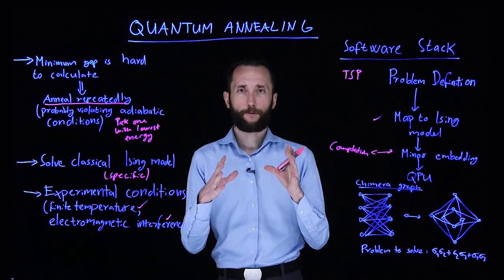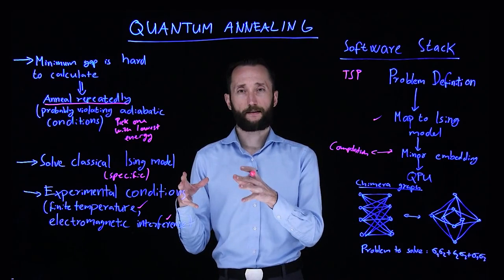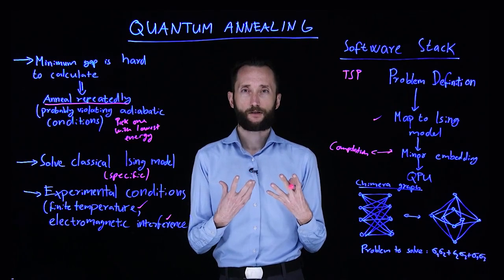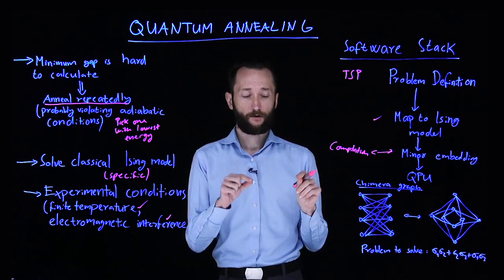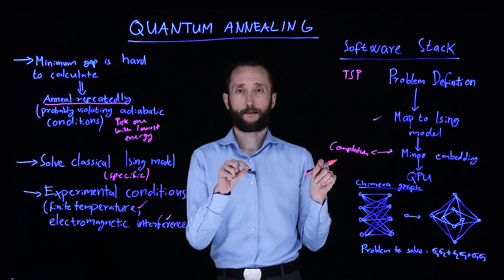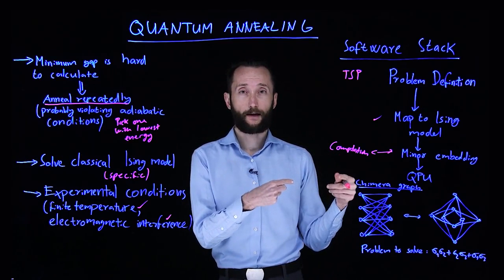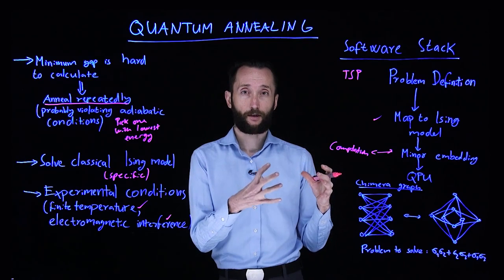First of all, you map from some gate sets that you defined in a circuit to the actual hardware, and then you also factor in the constraints of your architecture. For instance, if two qubits are not connected and you want to interact with the two, then the compiler has to do something to allow for that interaction.